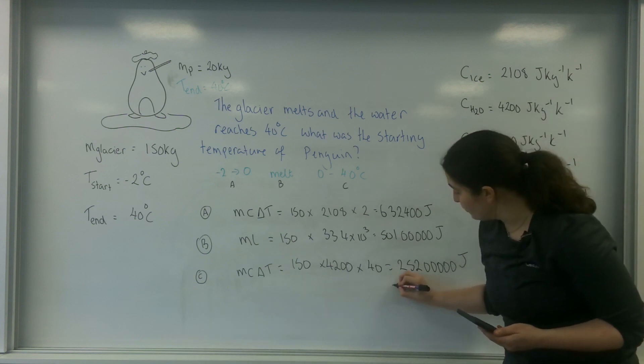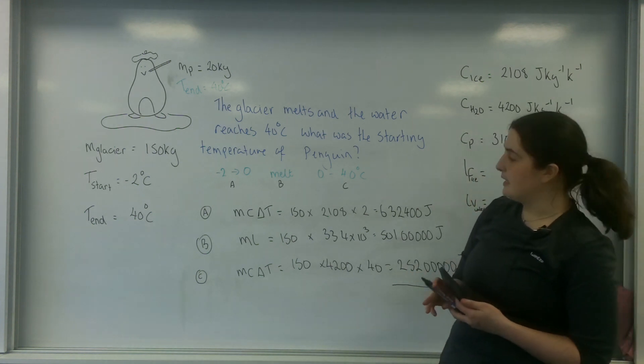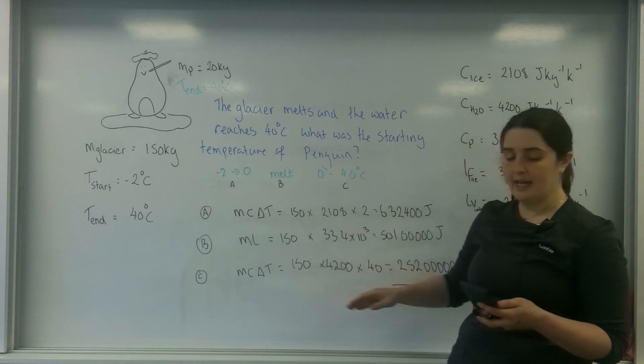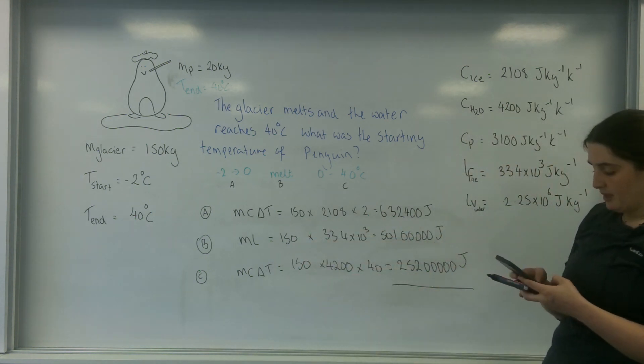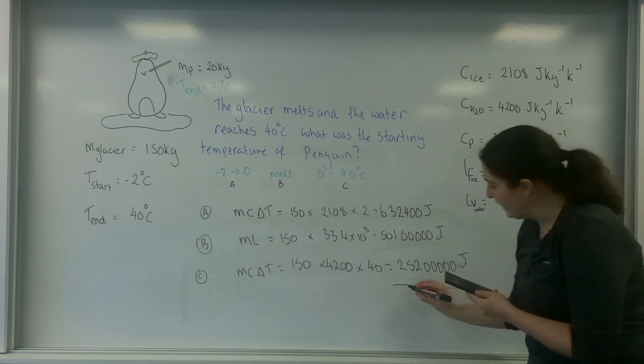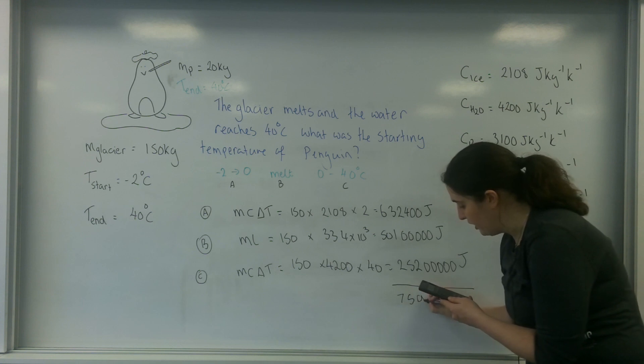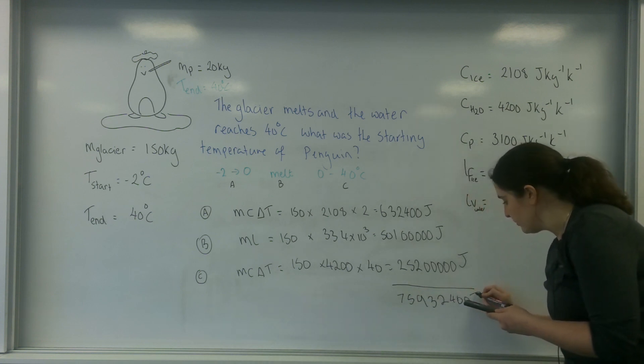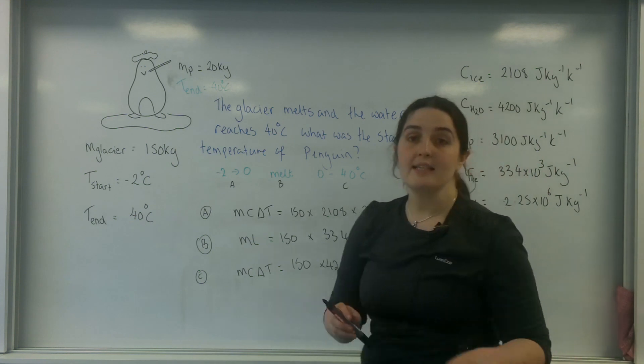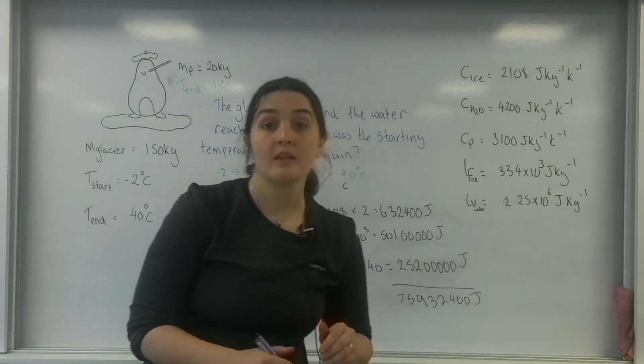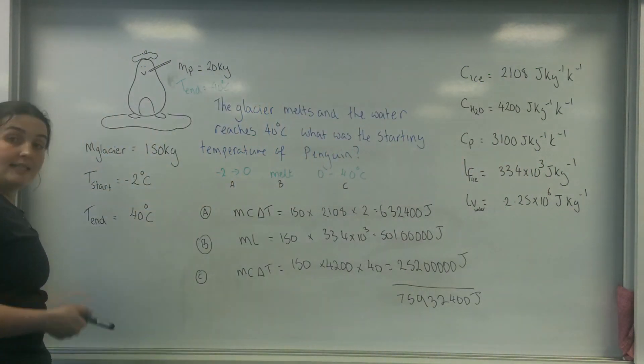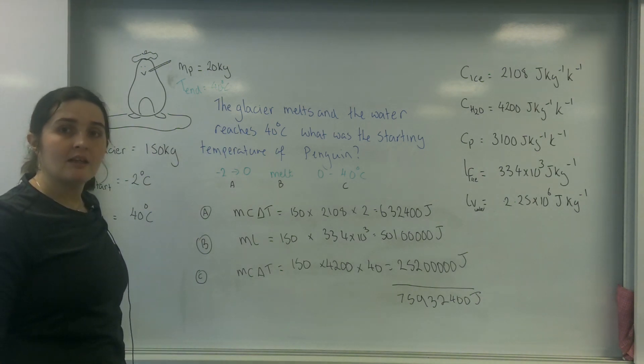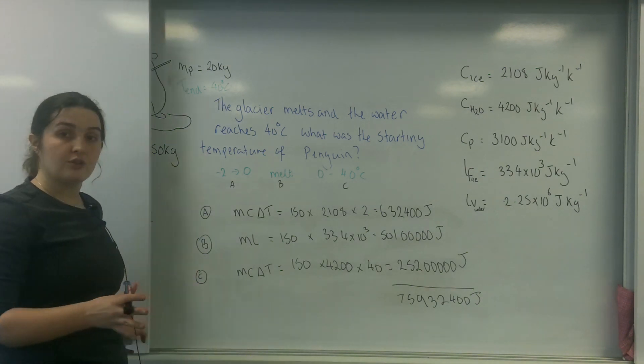So in total, my glacier has gained energy from here, here, and here. And I can find that out, so I'm adding this one to this one. And I get an answer of 75,932,400 joules. So in total, that is how much energy my glacier has gained, which means that is how much energy my penguin has lost.